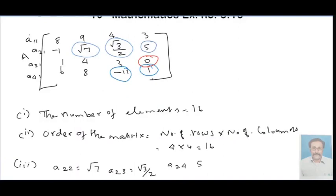To find A22 and A24, we look at the matrix positions. The first row has positions 11, 12, 13, 14, and the second row has positions 21, 22, 23, 24.